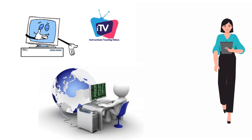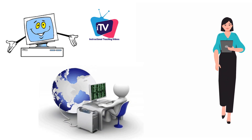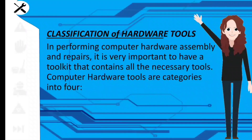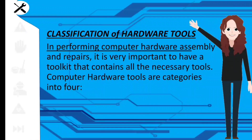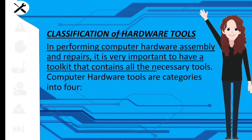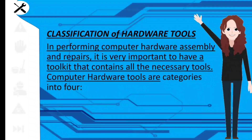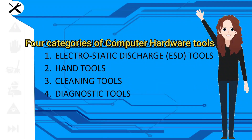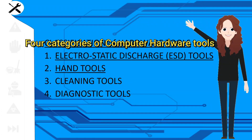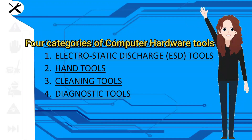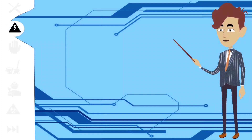Are you ready for another venture of learning? Let's get started! Classification of hardware tools. In performing computer hardware assembly and repairs, it is very important to have a tool kit that contains all the necessary tools. There are four categories of computer hardware tools: electrostatic discharge tools, hand tools, cleaning tools, and diagnostic tools. Let's start with electrostatic discharge tools.